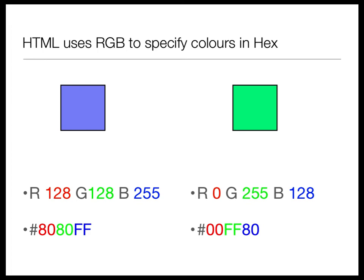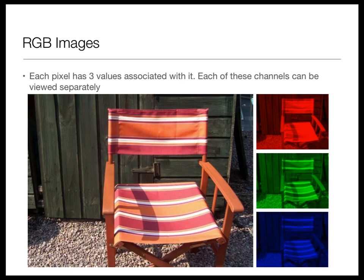You can also say rgb(128, 128, 255) using decimal values, though you should really be specifying colors in the CSS anyway.